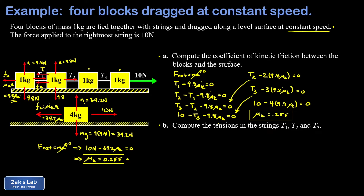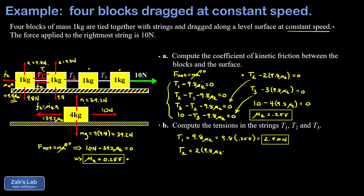Now we substitute μk back in to find the tensions. Starting with the simplest equation: T1 equals 9.8μk, which gives T1 equals 2.50 newtons. From adding the first two equations we already have T2 equals 2 times 9.8μk, which is twice T1, giving T2 equals 5.00 newtons. Finally, T3 equals 3 times 9.8μk, which is three times T1, giving T3 equals 7.50 newtons. We've now solved for μk, T1, T2, and T3.